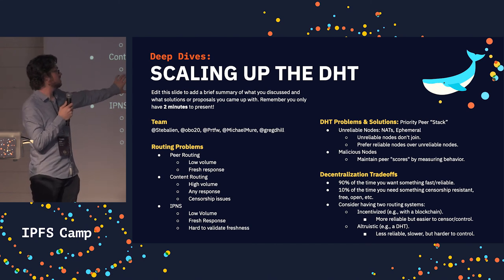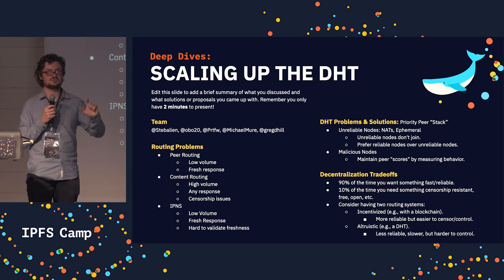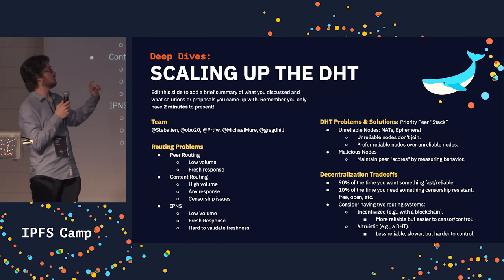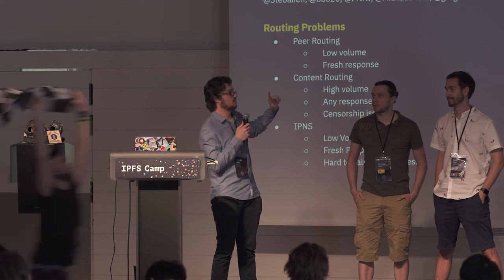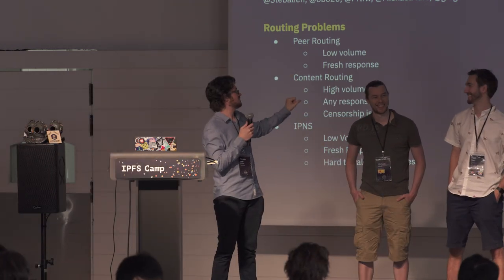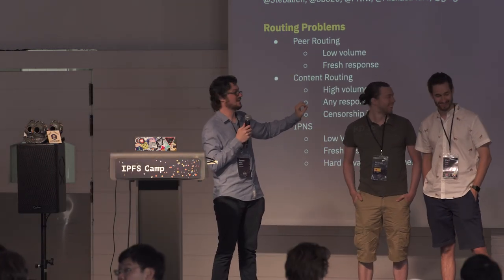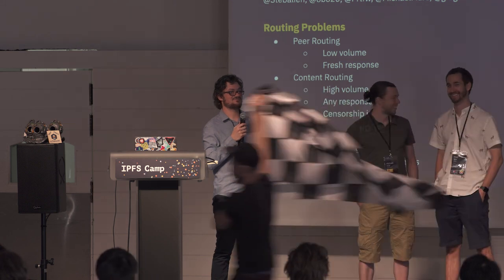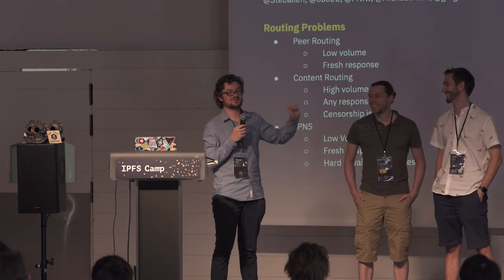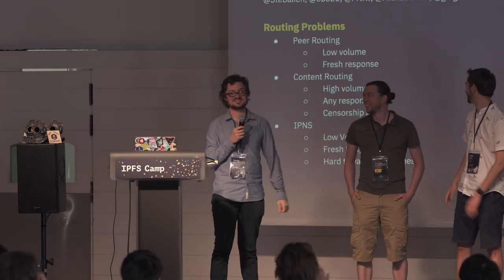Finally, we talked a bit about decentralization trade-offs. This came up multiple times in the conversation. We have a lot of trade-offs — in this case it was about speed versus substantial persistence.